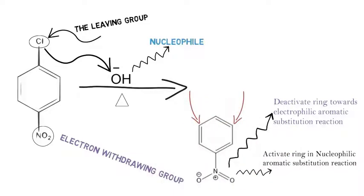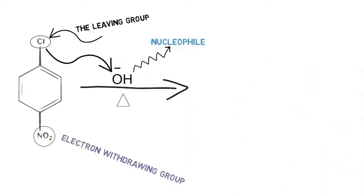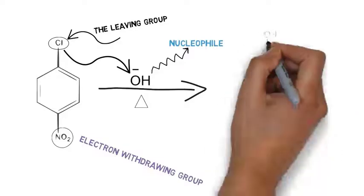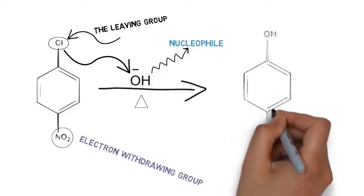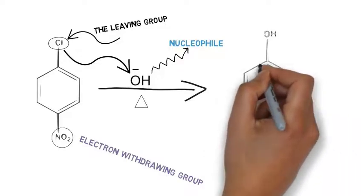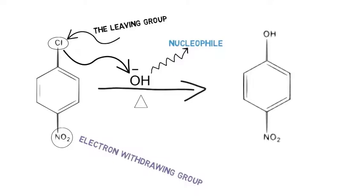They're not very effective in meta position. Now to get the final product of this reaction, all you need to do is simply replace the chlorine atom with the nucleophile, in this case the hydroxyl group. So now we have para-nitrophenol, and that's the product.